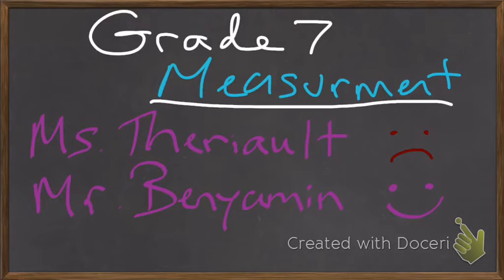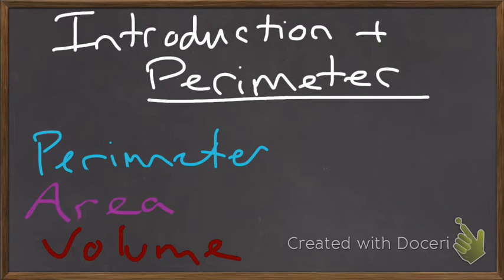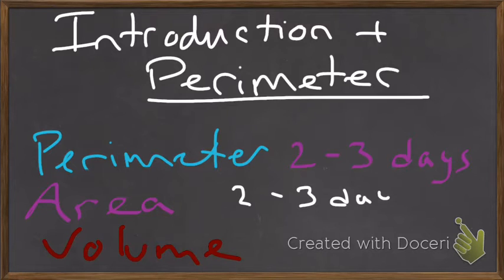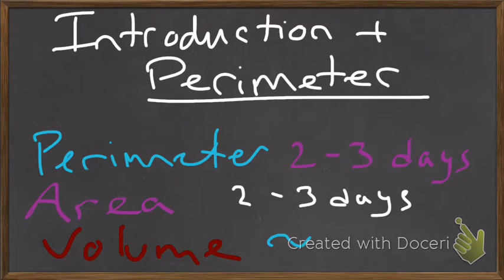We're going to be looking at measurements. So this is going to be an introduction video. We're going to take a look at a little bit of perimeter as well. Perimeter is going to take about two to three days. When we're done with perimeter, we're going to be looking at area, and that's going to take another two to three days. Perimeter and area are very similar, so we can kind of link them together. But after that, we're going to look at volume. Volume is going to take a bit longer — it'll be about a week.